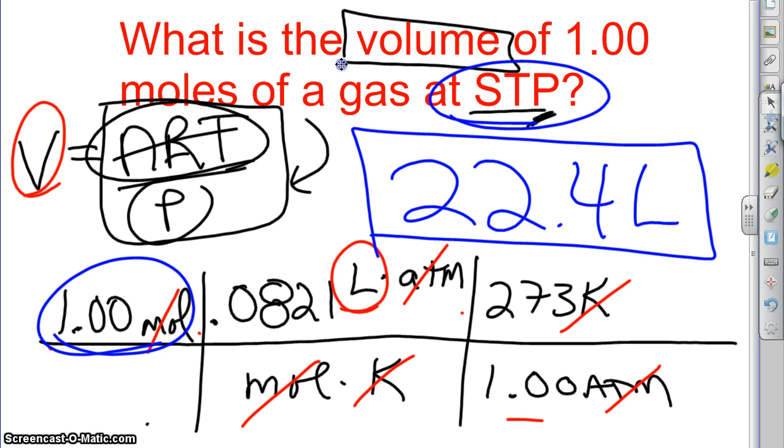So in any case, that is how you do it. You would start by finding your formula, plug things into the charts, make sure everything cancels out, and then work out the math.